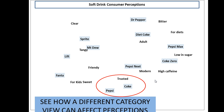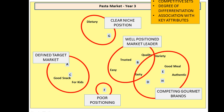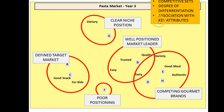So basically that is how you use this particular map. As one more example, I have included some data that I have run for pasta or spaghetti that you would buy in a supermarket. I have labelled the brands A, B, C and I have got again a range of attributes that each brand has been scored upon. I can see who the competitors are, how differentiated they are, what they are associated with, and what is the connection between the attributes.